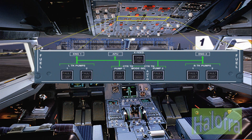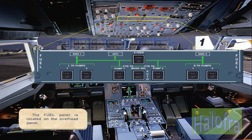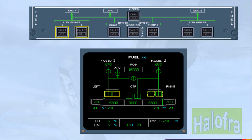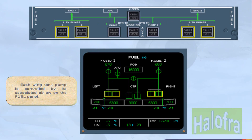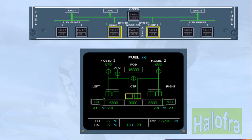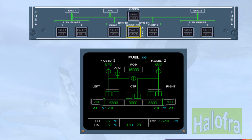The fuel panel is located on the overhead panel. Each wing tank pump is controlled by its associated push button switch on the fuel panel. Each centre tank pump is controlled by its respective push button switch. The mode selector push button switch enables the pilot to run the two centre tank pumps in automatic or manual mode. The cross feed push button switch enables the pilot to connect or isolate the left and right sides of the fuel system.